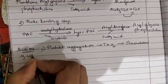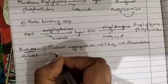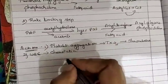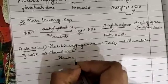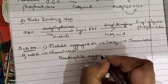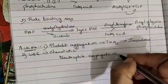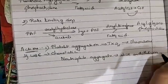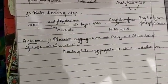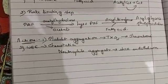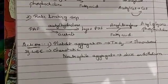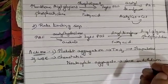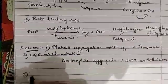The second action is on white blood cells. PAF acts as a chemotactic agent, especially for neutrophils and monocytes. Neutrophils normally aggregate and stick to the endothelium. Once they stick, they migrate to the site of infection, where they cause the release of lysosomal enzymes and superoxide ion radicals at that particular surface.